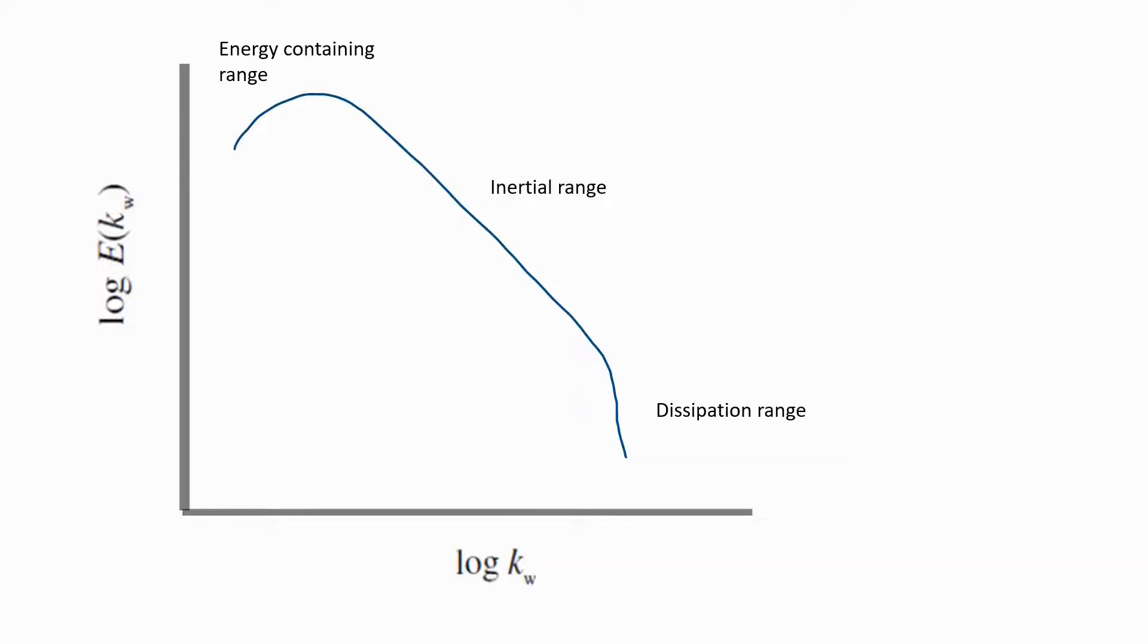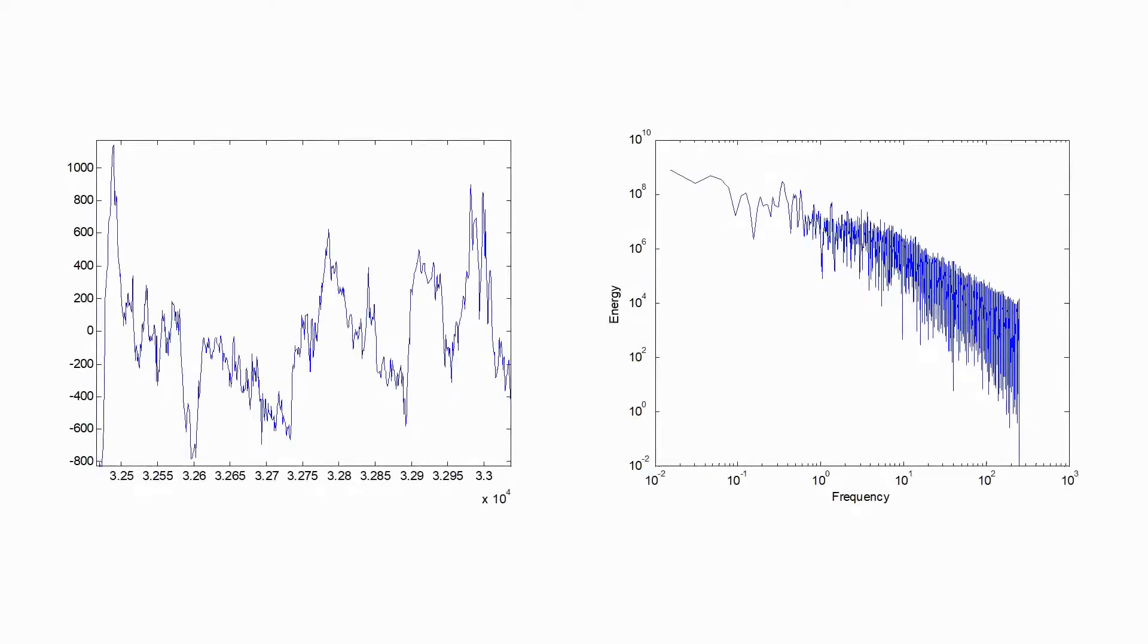And it's really quite a peculiar thing that the behavior of turbulence, which really has nothing to do with financial markets at all, should have so many statistical properties like this in common with financial markets. In fact, if I were to show you a chart of turbulent data, it would be easy for you to mistake it as a financial market chart. And here's one here just to prove that point.